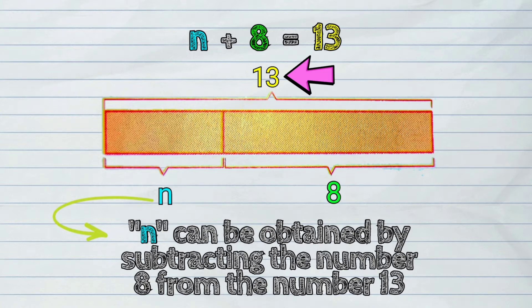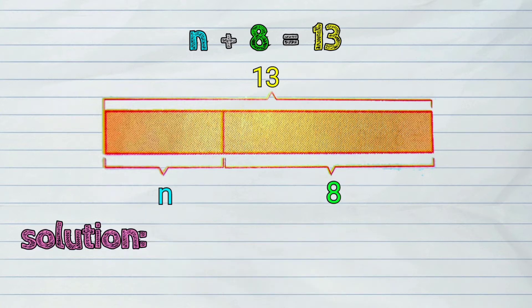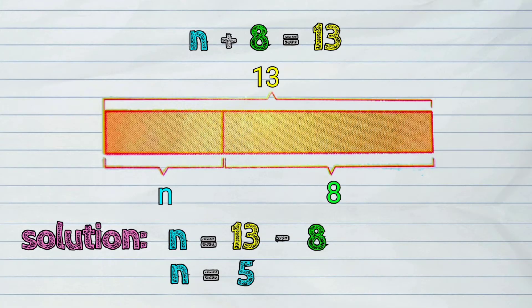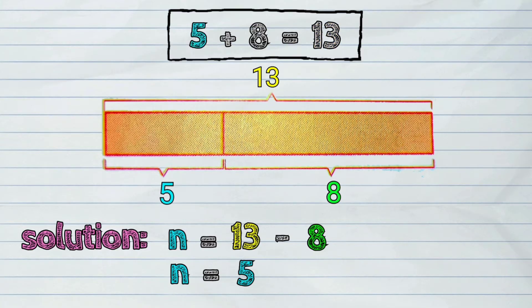Therefore, this would be our solution: n equals 13 minus 8. The answer here is 5. So it means 5 plus 8 is equal to 13.